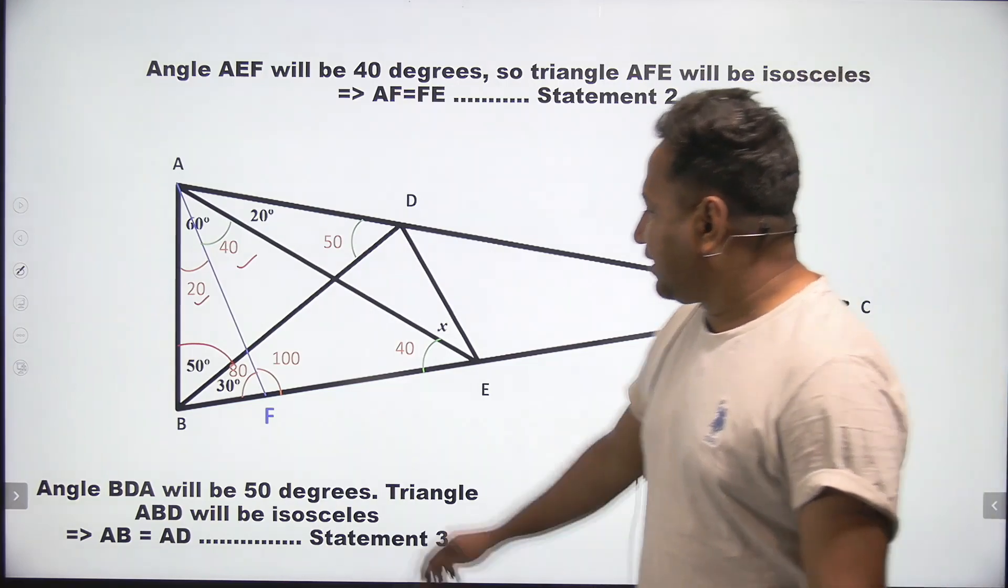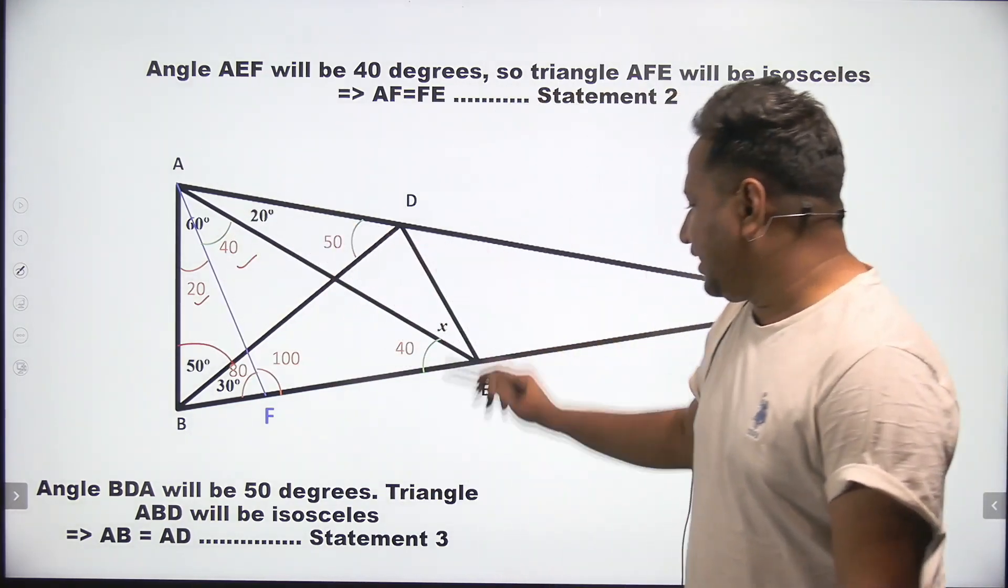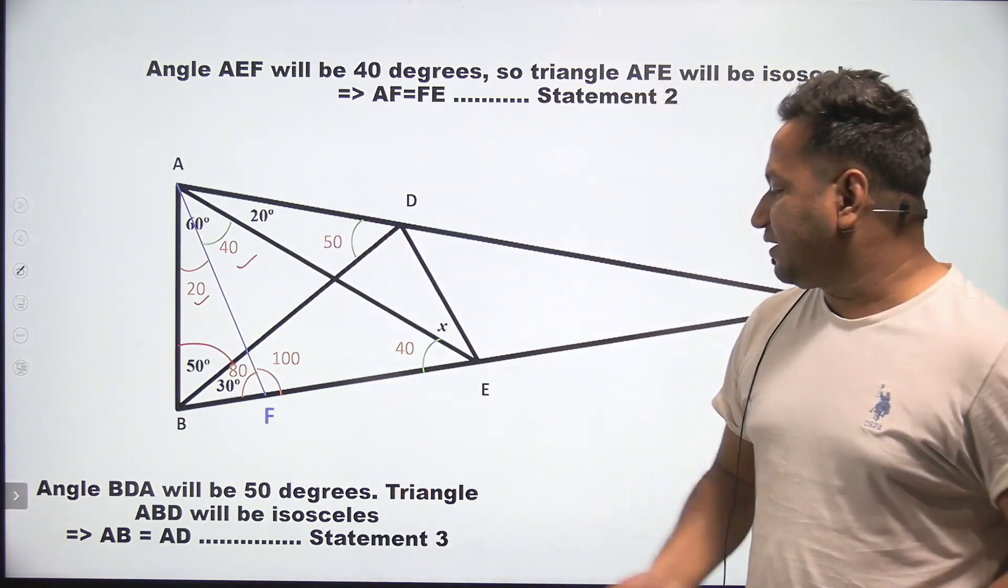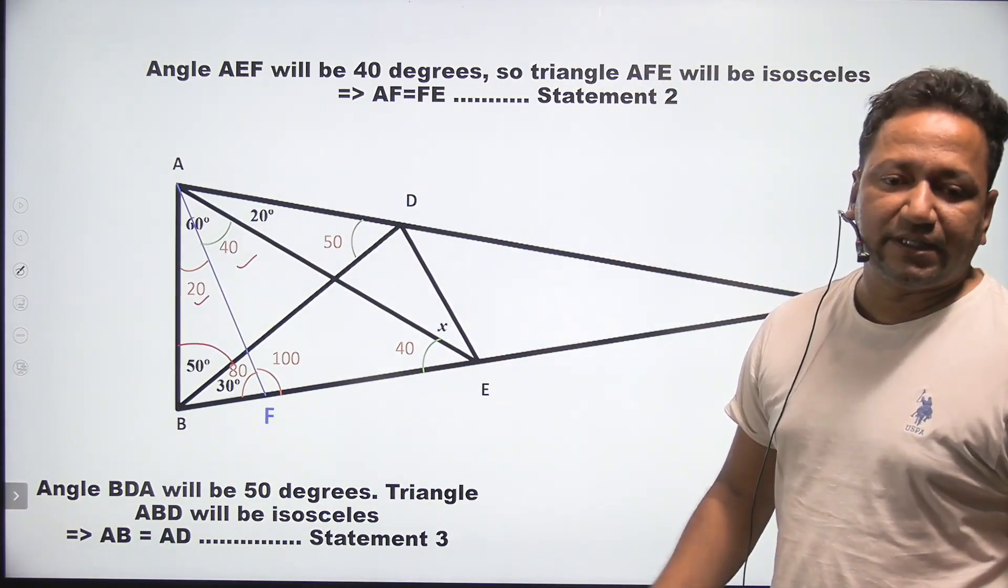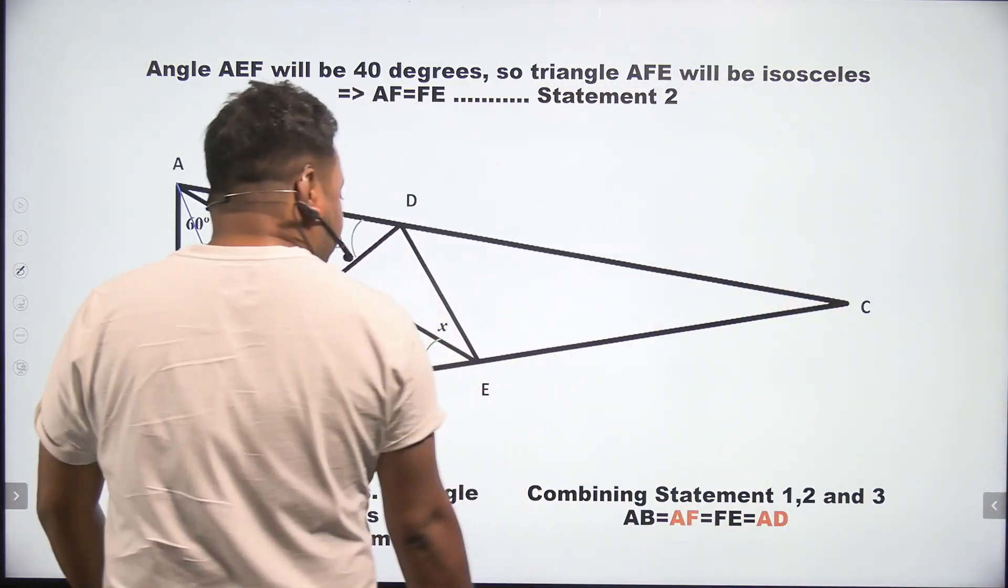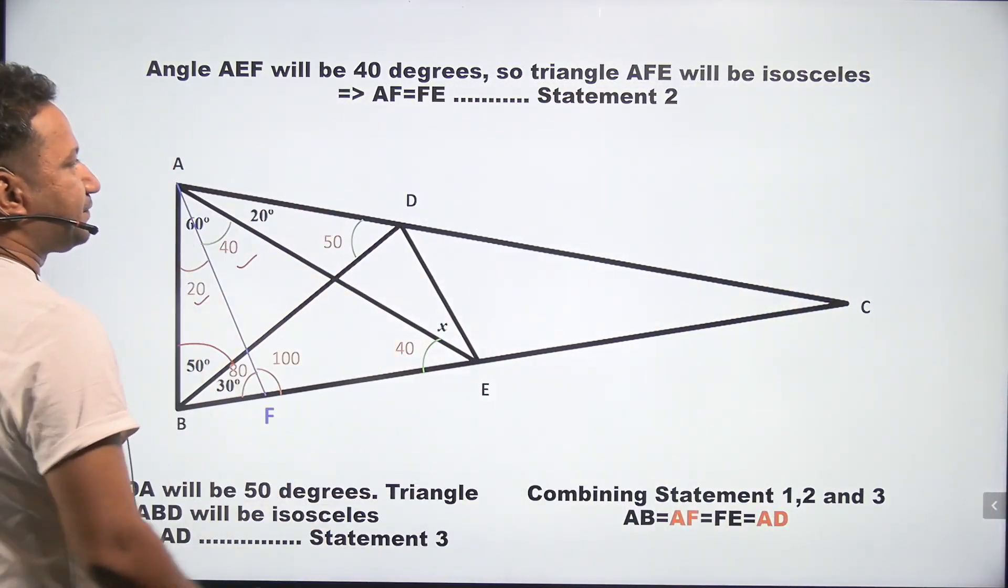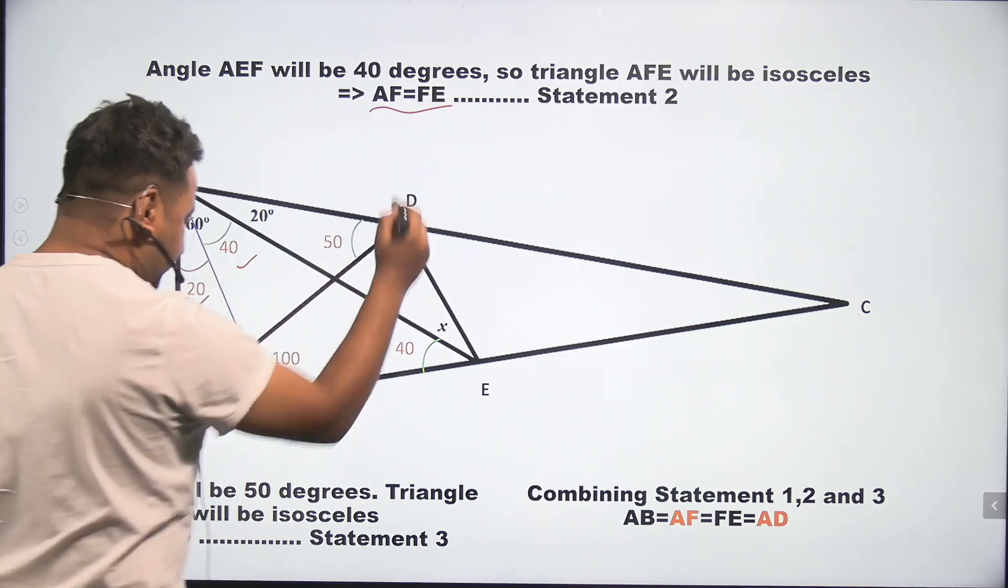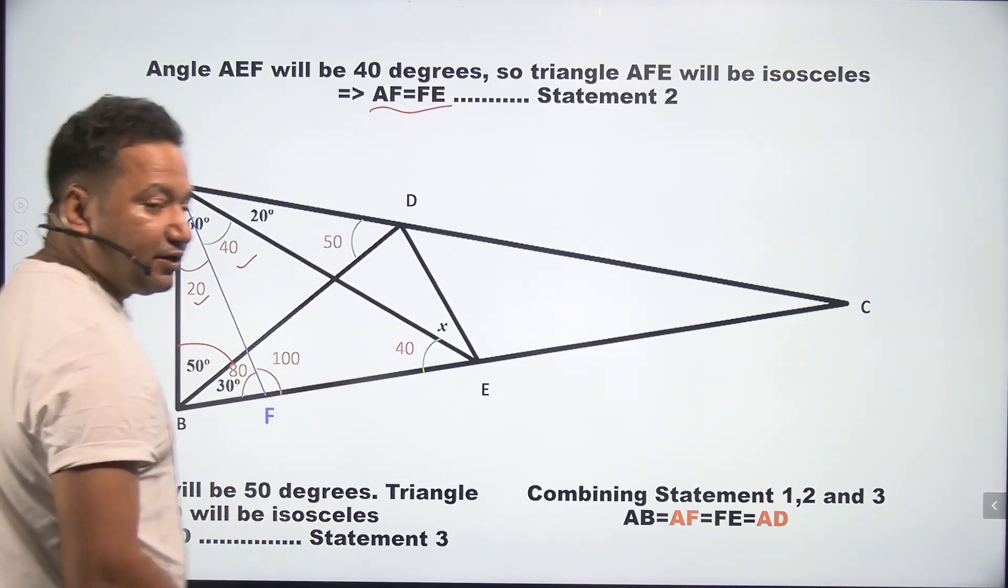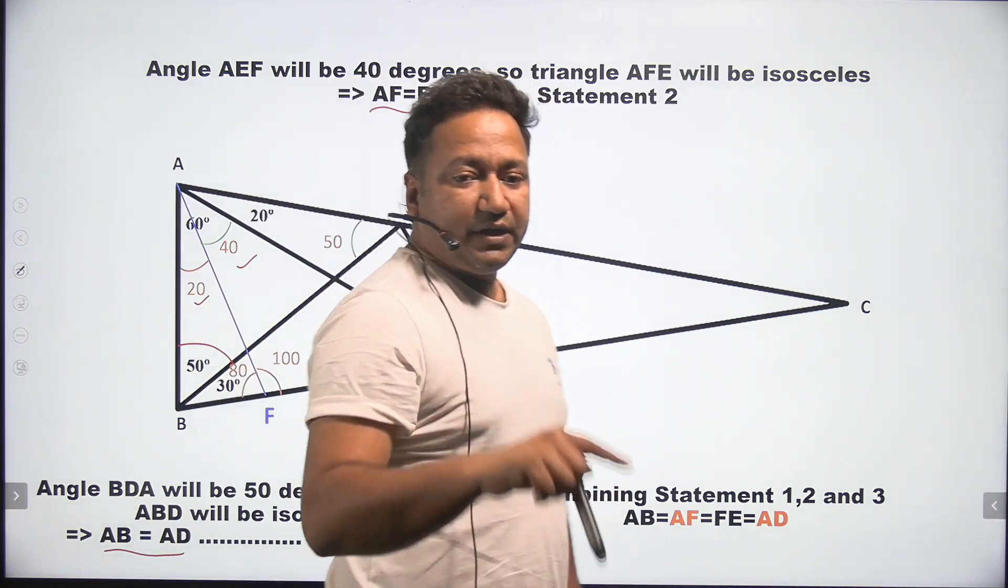Now, again, we can say that AB and AD will be equal, which means the triangle ABD will again be isosceles. So now we have three isosceles triangles in total. This is statement 2, AF is equal to FE. Statement 3 is AB is equal to AD. And statement 1 was AB is equal to AF.